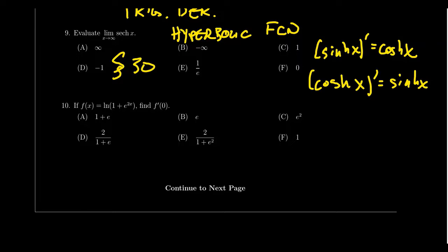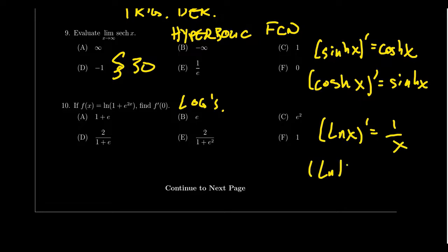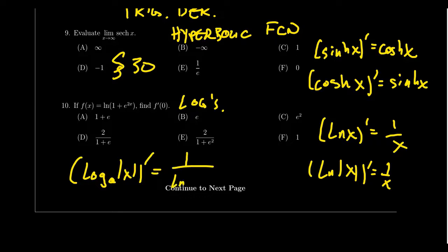Question number 10, the last multiple choice question, will require taking the derivative of a logarithm. Remember: the derivative of the natural log of x equals one over x; the derivative of the natural log of the absolute value of x likewise equals one over x. In general, the derivative of log base a of the absolute value of x equals one over the natural log of a times x. This could also involve the chain rule. The topic of logarithm derivatives was introduced in lecture 26.